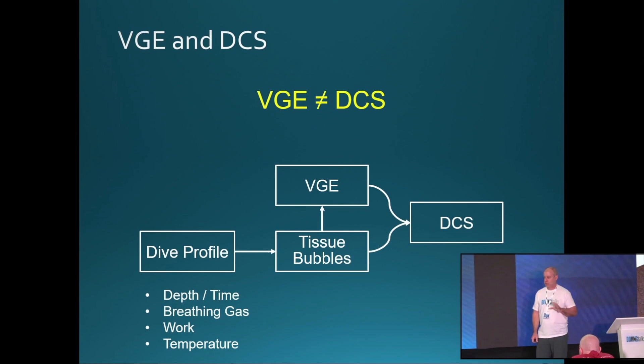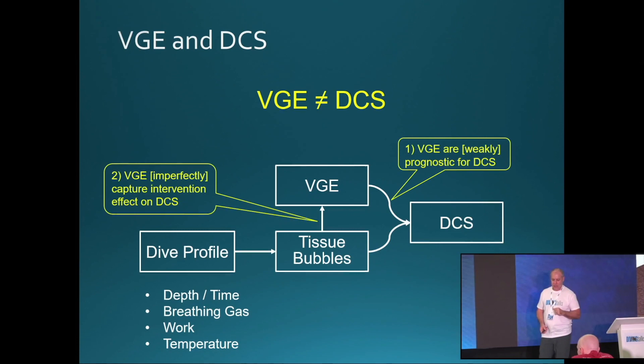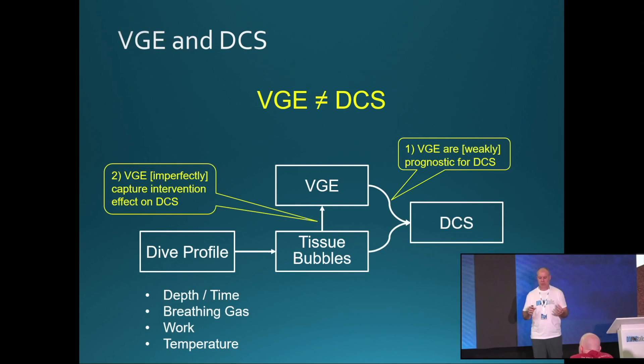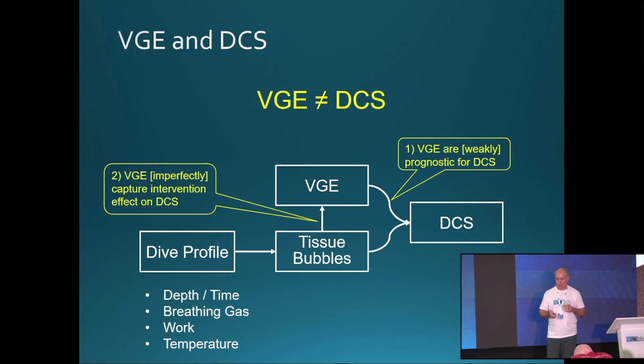VGE and decompression sickness - that's the first point I want to make. We measure VGE for what they can tell us about DCS. VGE are often harmless - that diver in the clip before was perfectly fine. But we measure VGE because they tell us two things: first, VGE capture what the dive profile is doing to bubble formation in the whole body - the more VGE we see in the heart the more there are everywhere. Second, VGE are prognostic of decompression sickness - the more VGE you have the higher the risk of your dive.